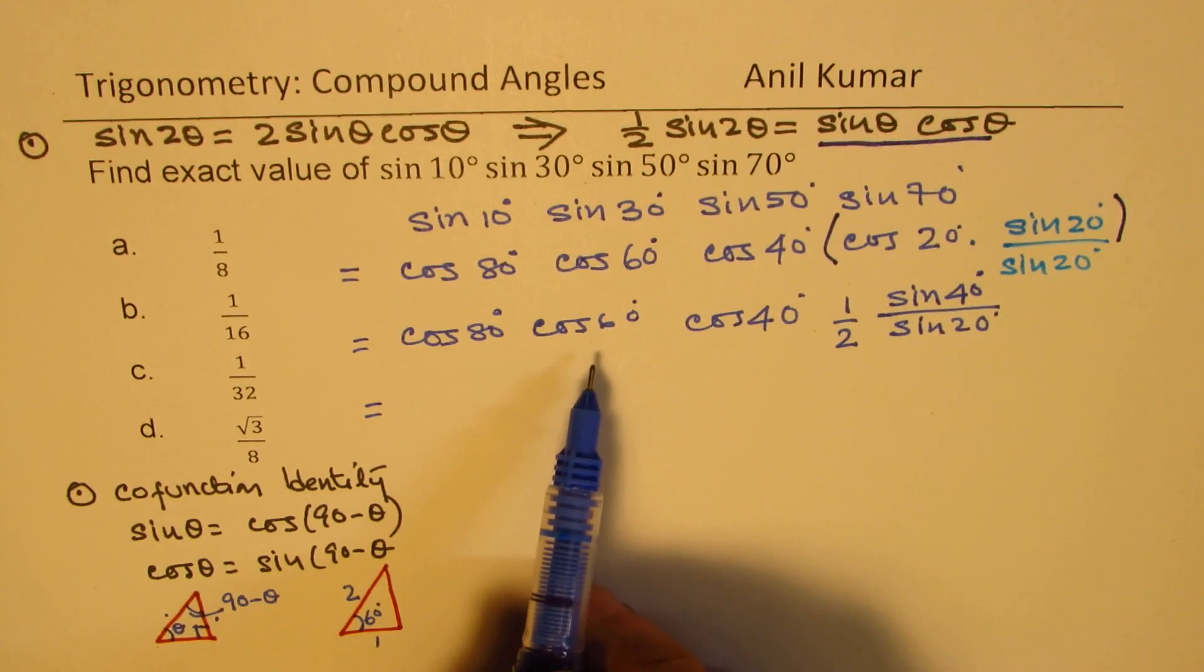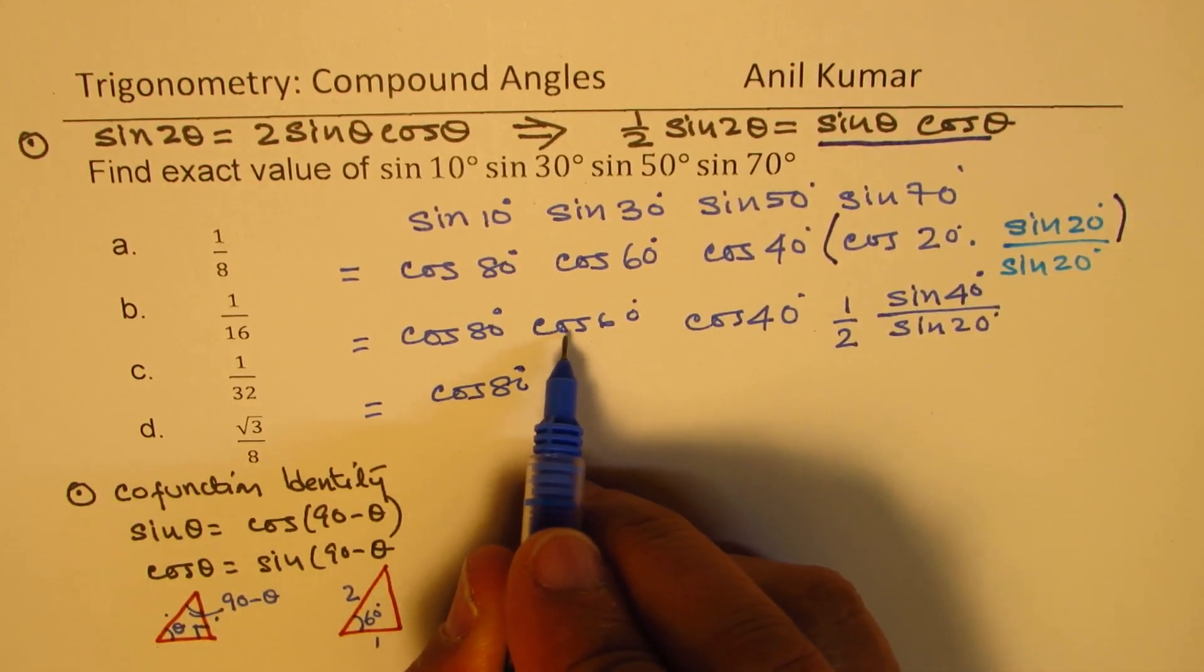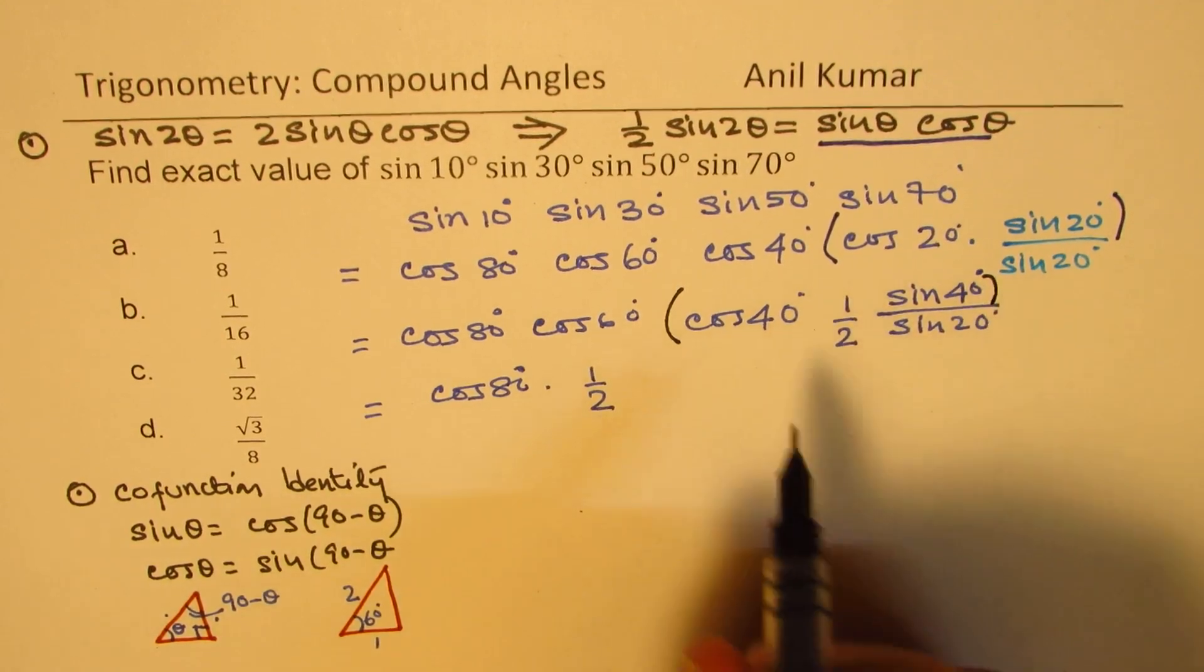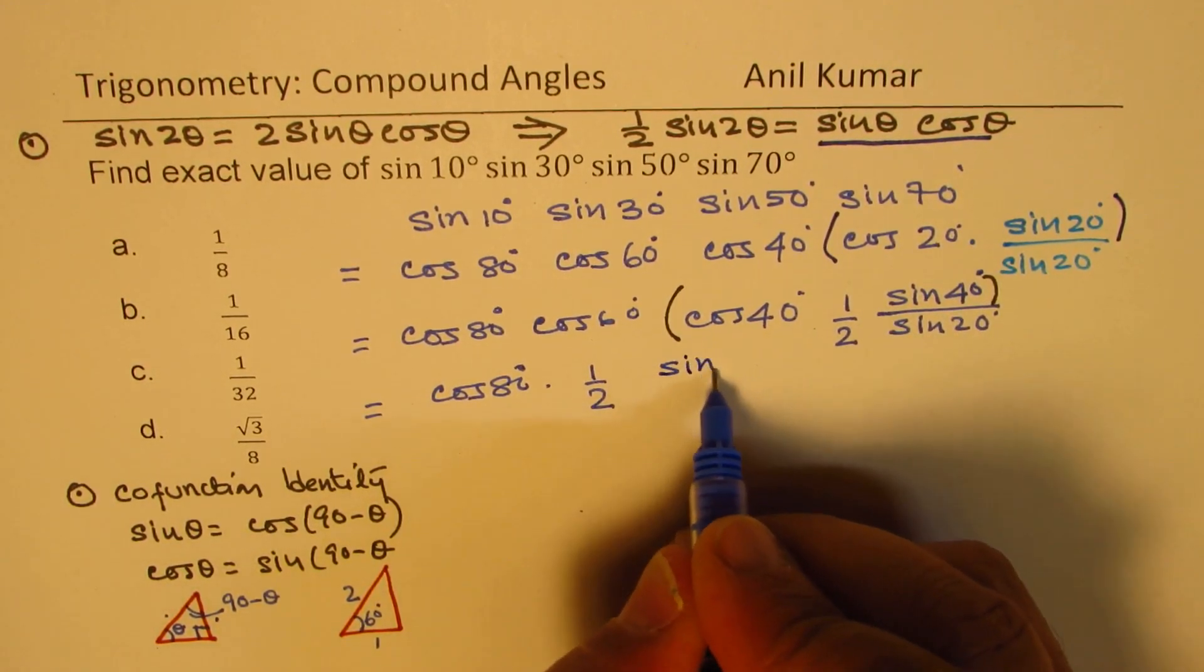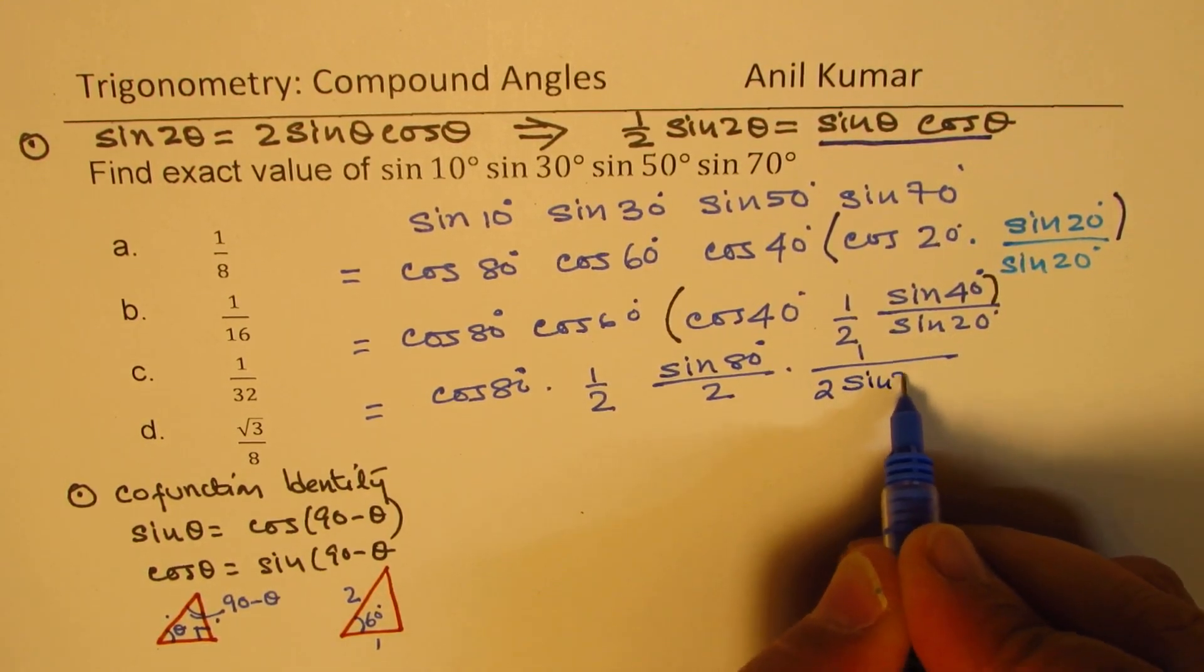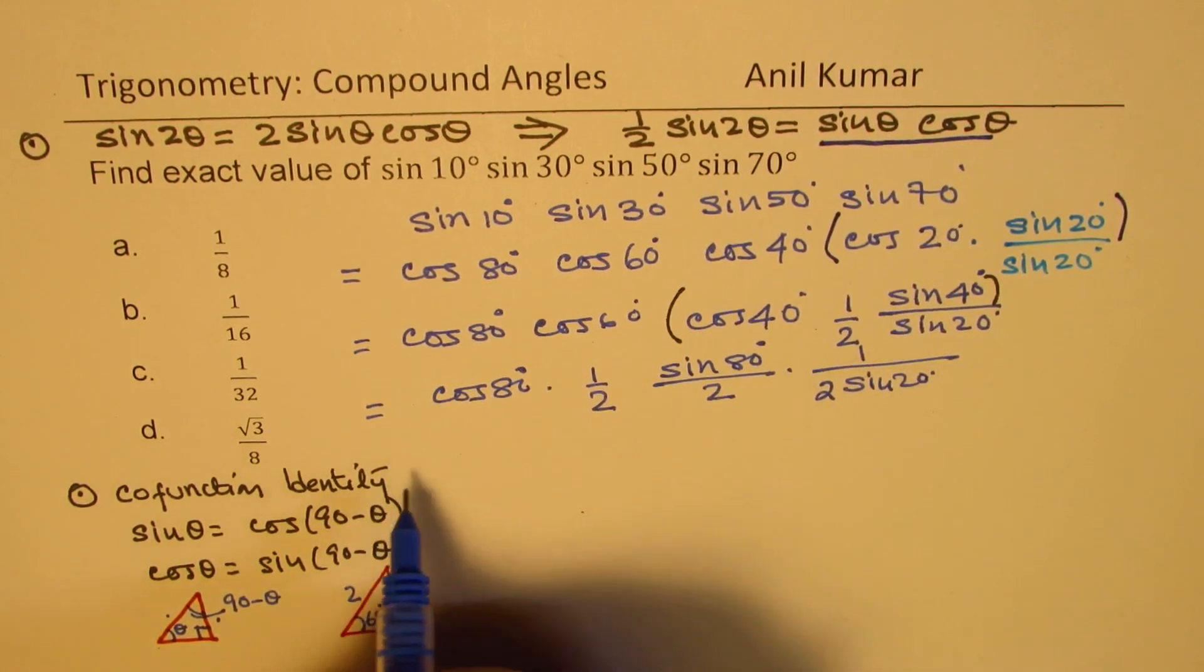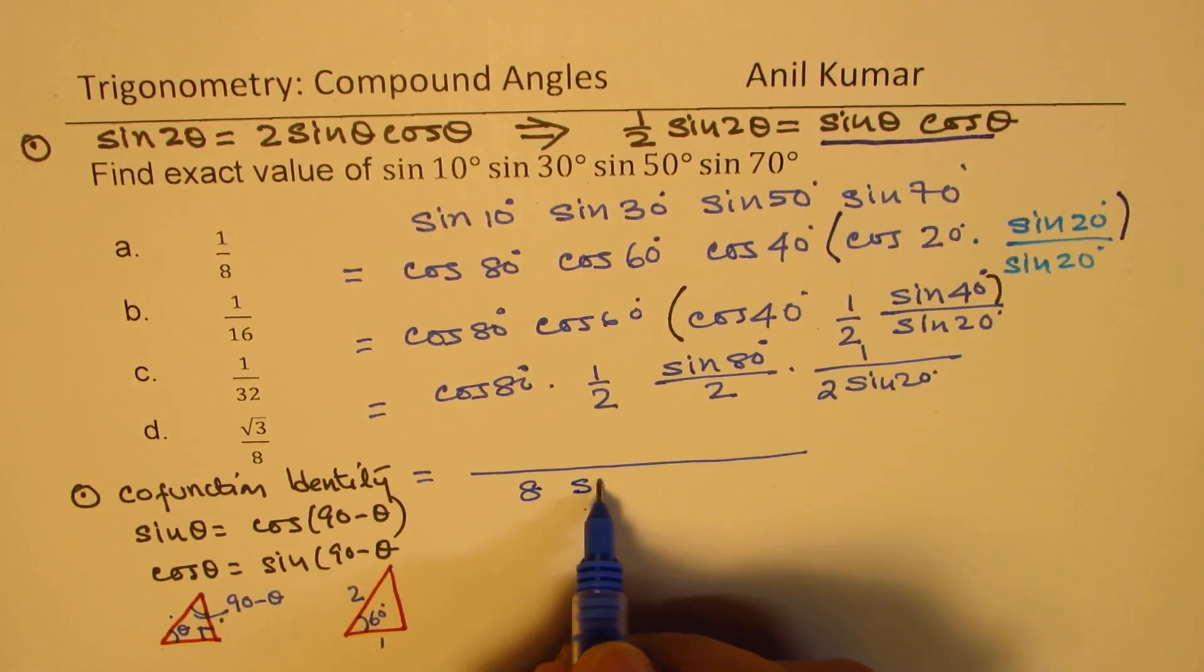Now, we'll replace cos 60 degrees with half. So, we're writing this as cos of 80 degrees times half. Here, you notice that, again, we have this combination of sin 40 and cos 40. That can be replaced by sin of 80 degrees. So, that becomes sin of 80 degrees divided by 2, and we already have a term which is 1 over 2 sin 20 degrees. This half is because of cos 60. This sin 80 by 2 is for cos 40 sin 40, and 2 sin 20 is written there. Let me combine all these terms in the denominator, which is 2 times 2 times 2, which is 8 sin of 20 degrees.